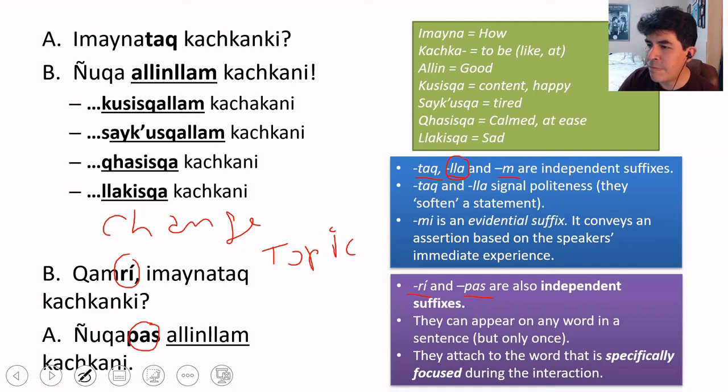And then you have pas. Pas means also. In fact, pas has many meanings in Quechua, but the most basic one is to add something else. It's an additive if you want. So in more simple terms, it means also. So nyokapas means also I, me too. Nyokapas, alin lian kashani. I am also fine.